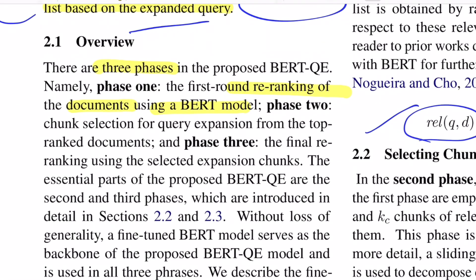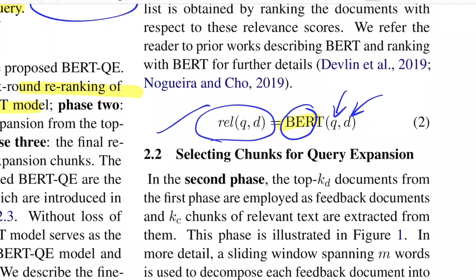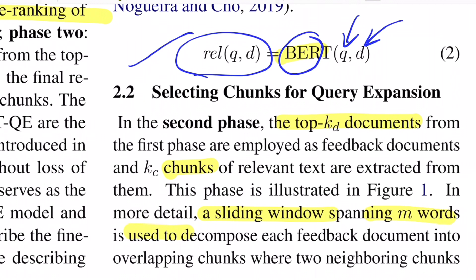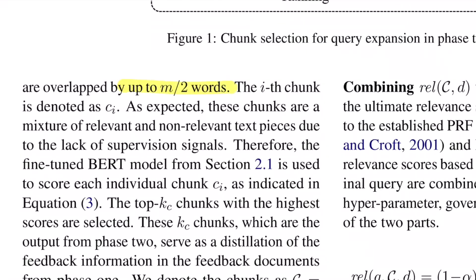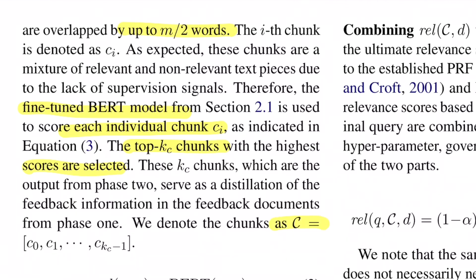In phase two, they do chunk selection from the ranked documents from phase one. Phase one returns a relevancy score for each document, giving you a ranked list. The top KD documents go to phase two, where you extract relevant chunks using a sliding window spanning M words, decomposing each document into K segments. The window is overlapping to capture context from the previous window, so the stride is M/2 words. For example, with six words and window length M=2, you stride by one, essentially traversing bigram sequences. Once you have K sequences across all phase-one documents, the same fine-tuned BERT model scores each chunk and extracts the top KC chunks with the highest scores.